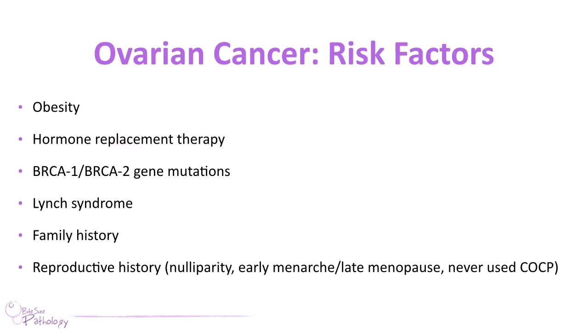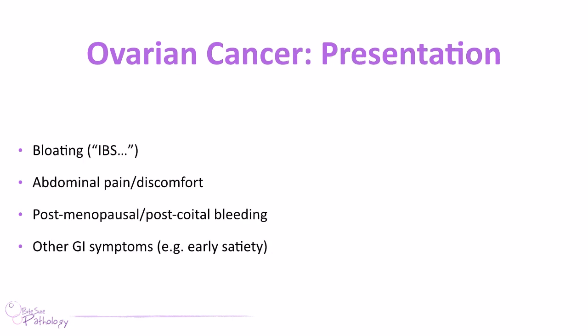The risk factors for ovarian cancer relate to oestrogen exposure — so obesity and hormone replacement therapy again — and genetic factors including a family history, BRCA1 and BRCA2 gene mutations, and Lynch syndrome. Reproductive history is also important: particularly patients who haven't had an 'oestrogen holiday' — those who have never had children, had early menarche and late menopause, or have never used a combined oral contraceptive pill. In terms of presentation, ovarian cancer presents very vaguely with bloating, IBS-type symptoms, abdominal pain and discomfort, post-menopausal and post-coital bleeding, and early satiety.